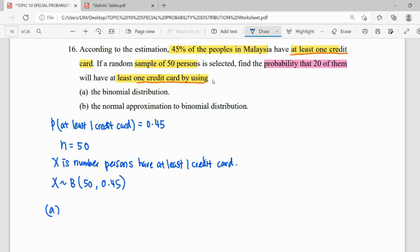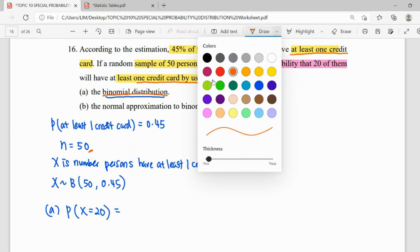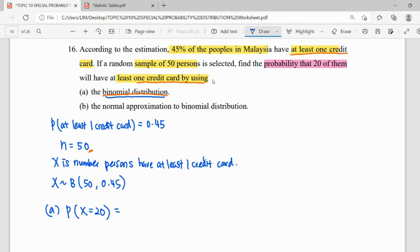So for the first question, they asked to find the probability that 20 of them have it, which means X equals 20. First question, answer using binomial. Although we can see here our n is 50, it's quite large, and our mean is also more than 5. But the question says to use binomial distribution, so we follow the instruction.